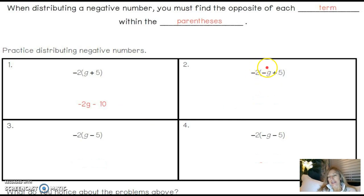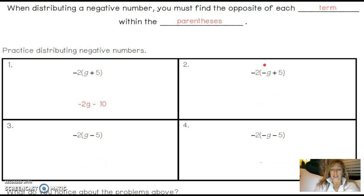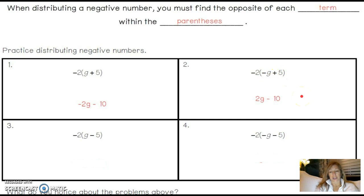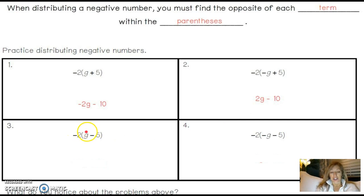In the next problem we make it opposite again. Negative 2 times negative G — it's a negative G, so the opposite of negative G is positive G. Negative 2 times 5: 5 is positive, 2 times 5 is 10, but the opposite of a positive is a negative. So the answer is positive 2G minus 10.